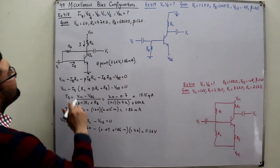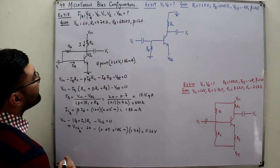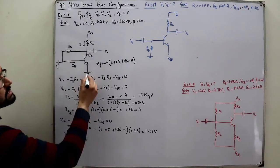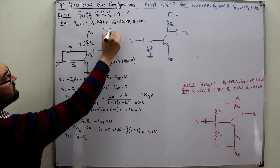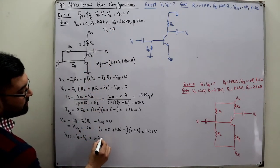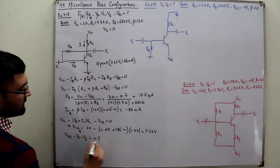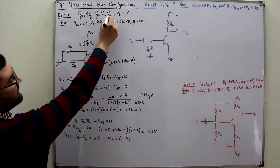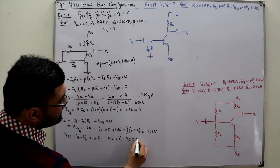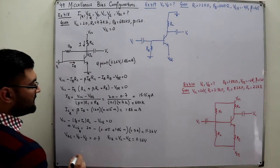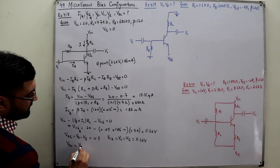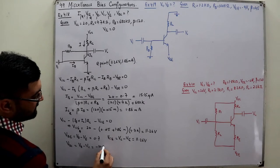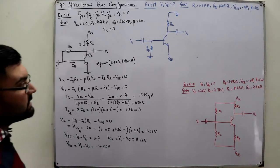VB: since VBE equals VB minus VE, and the emitter is solidly grounded (VE = 0), VB equals VBE = 0.7V. VCE equals VC minus VE, so VC = 11.26V. VBC equals VB minus VC = 0.7 minus 11.26 = negative 10.56 volts. The negative sign indicates reverse biasing.